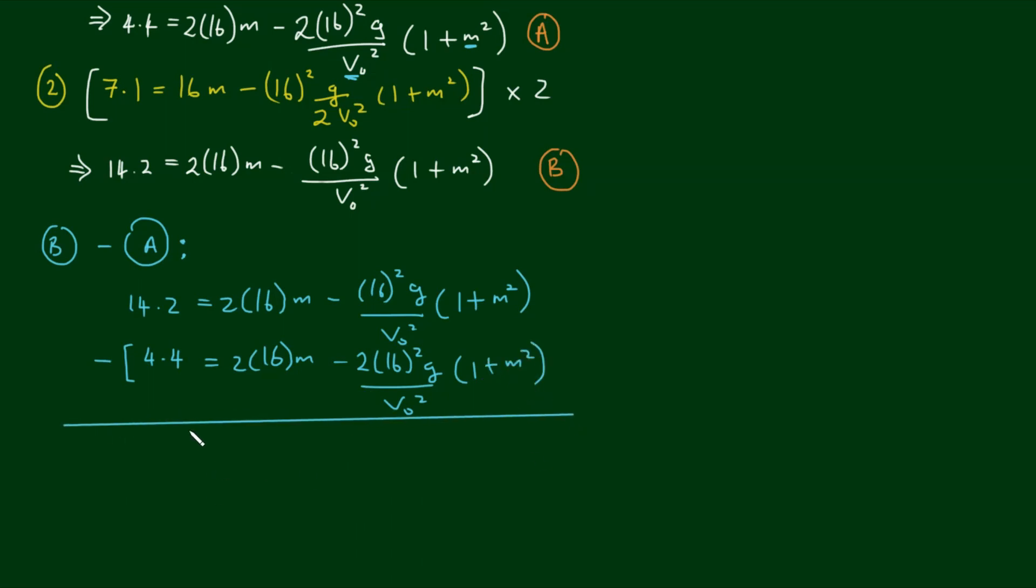14.2 minus 4.4 equals 9.8. These 2 subtract to zero, minus we have a negative 16 squared and a double negative 2 by 16 squared which equals positive 16 squared g divided by v0 squared times 1 plus m squared.